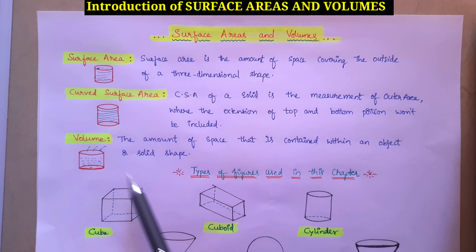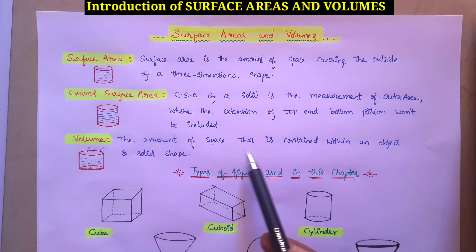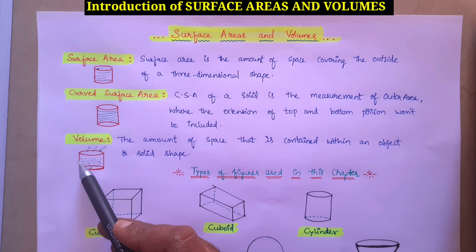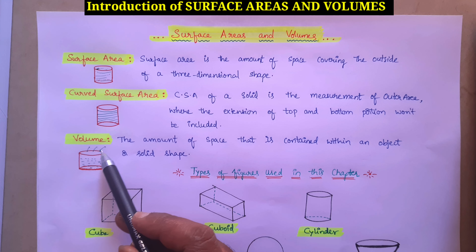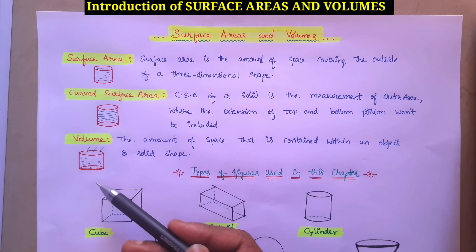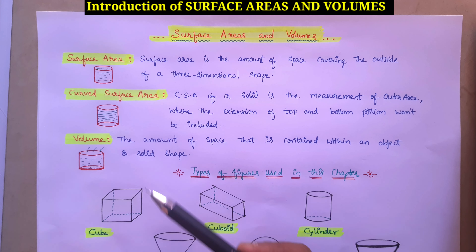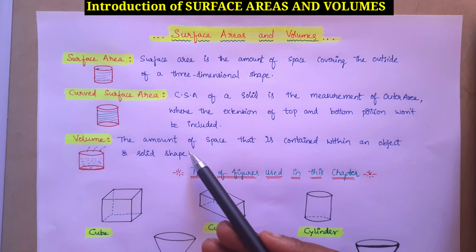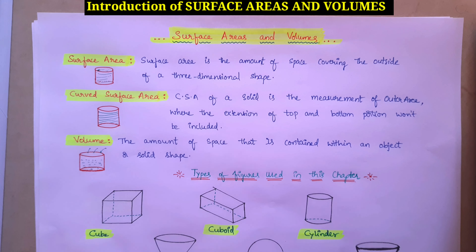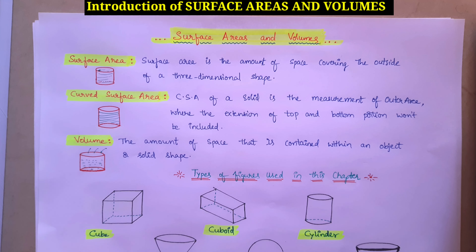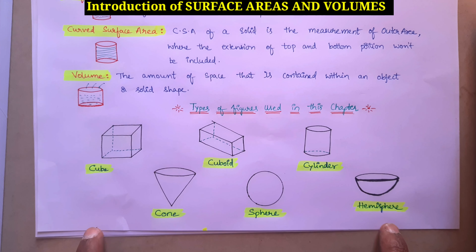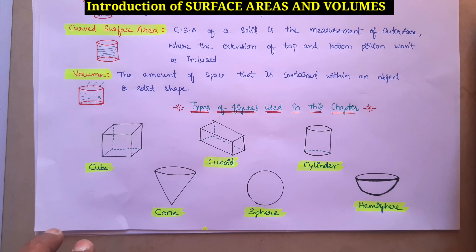When it comes to volume, it is the amount of space that is contained within an object or solid shape. For example, if we consider a vessel and pour some water into it, how much water we can pour into it — that we will consider as volume.